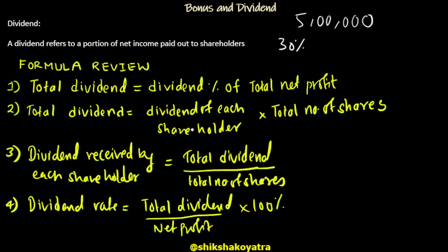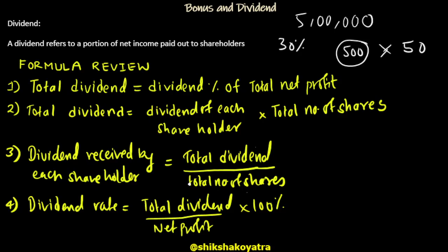1% shareholder or total number of shares. Dividend rate: total dividend divided by net profit. Dividend divided by profit, multiplied by 100% rate — percentage multiplied by 100%. This formula is the bonus and dividend exercise, easy to do.